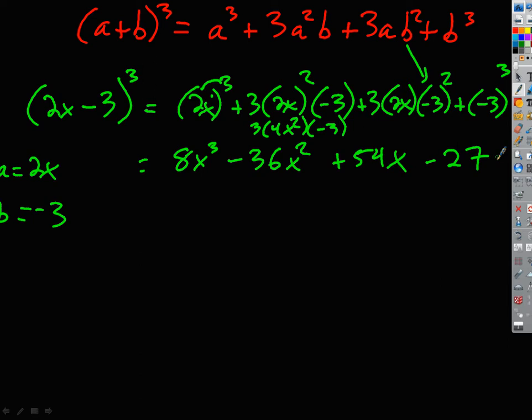Isn't that way quicker? Seriously, imagine if you had 2x minus 3 to the fifth — that would take a long drawn-out process distributing and simplifying four times to get the answer, with each step giving a worse polynomial. But you could do it in just one step following that expansion pattern.